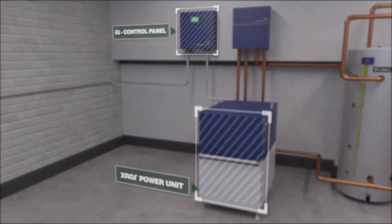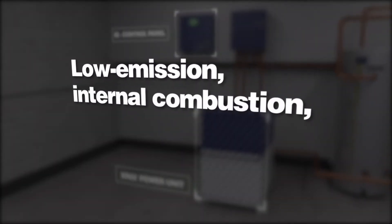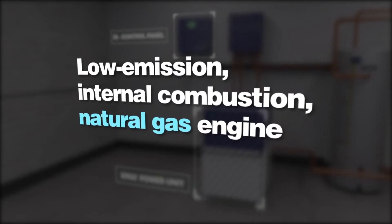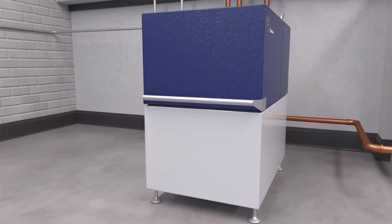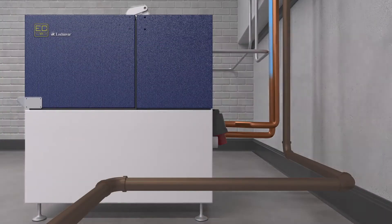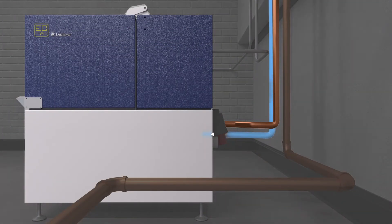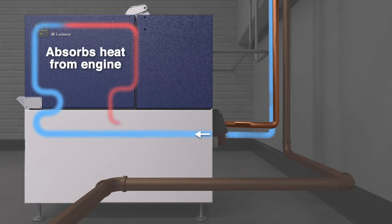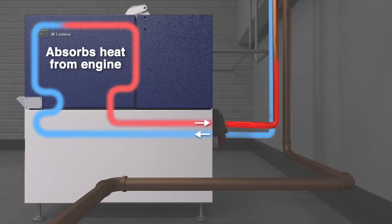The power unit includes a low-emission internal combustion natural gas engine coupled to a generator that produces 24 kilowatts of electricity. Water flow cools the power unit components, absorbing the heat and transferring it to the heat distributor.